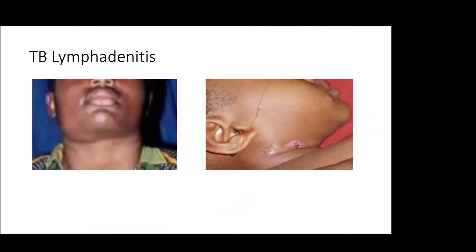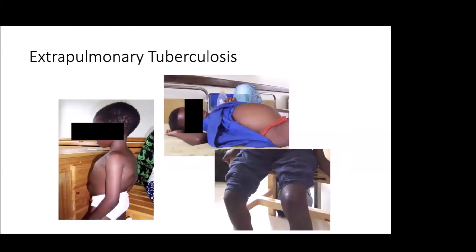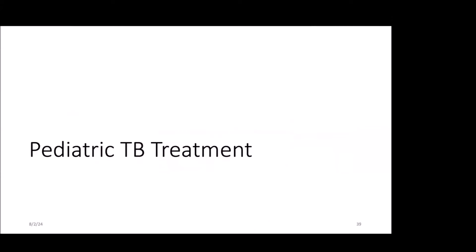TB lymphadenitis often presents in the neck, but not always — I've certainly seen it in the axilla and the groin. You'll often have a slowly growing, subacute presentation with a lot of overlying erythema, perhaps draining, which can or cannot be associated with pulmonary TB. You can have TB in your back with Pott's disease. You can have TB in your belly or in your joints.